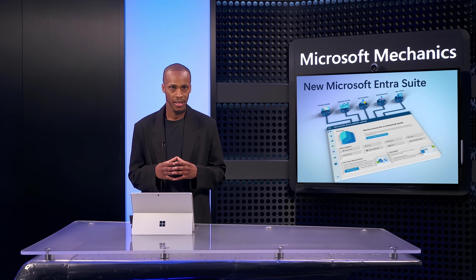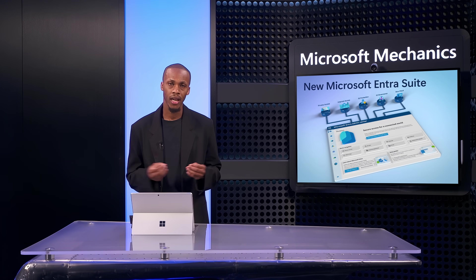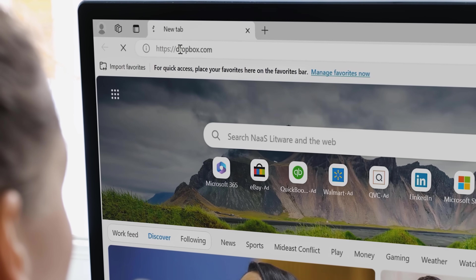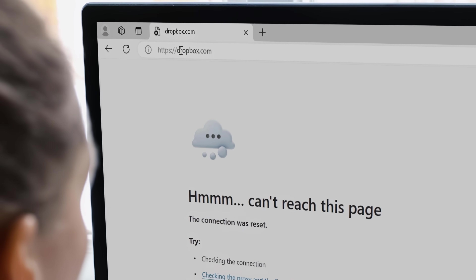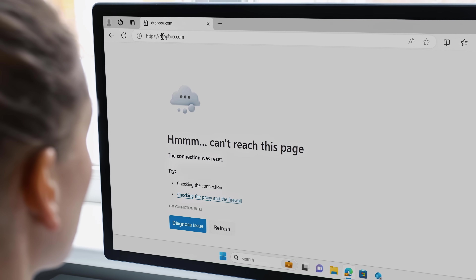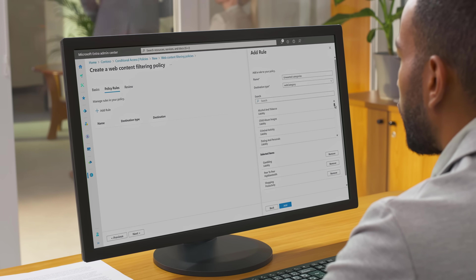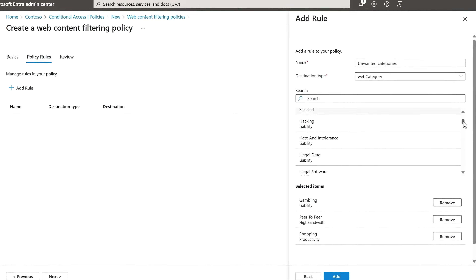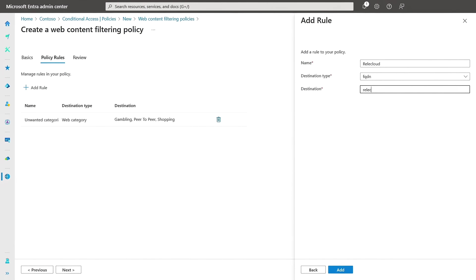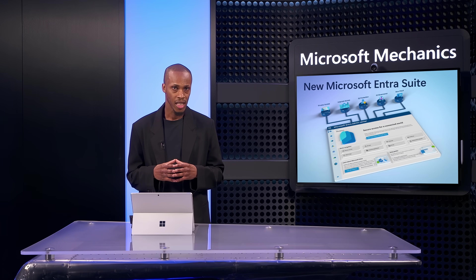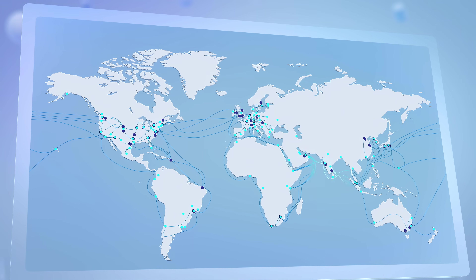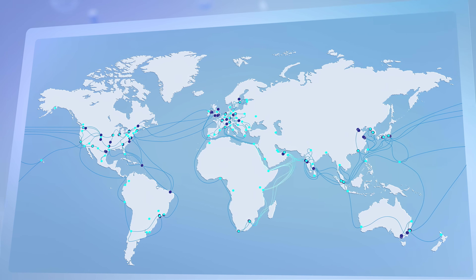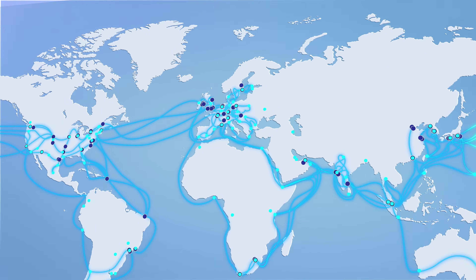Microsoft Entra Internet Access is designed to prevent end-user access to unsafe and non-compliant content. To keep your users and devices safe from internet threats, it protects them against malicious traffic using cloud-delivered network security controls, including web content filtering based on Microsoft-maintained categories as well as endpoints that you can define as an admin. It also provides fast and seamless access to a globally distributed secure network edge and private WAN to optimize traffic routing to internet destinations.